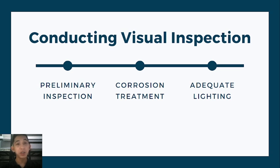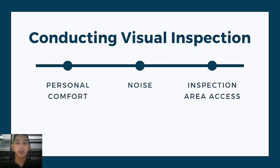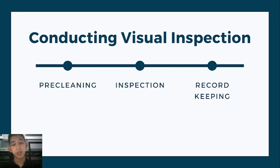Second is corrosion treatment. Because of the criticality of corrosion, personnel who conduct the NDI must be familiar with the appearance of corrosion and must have training and experience in corrosion detection. Moreover, corrosion must be treated during the preliminary inspection. Before inspecting, we need to provide adequate lighting, especially on the parts being inspected. The personal comfort of the inspector can be a factor in the reliability of visual inspection, and therefore the inspector should be comfortable during the process. Noise is also a factor and increases the likelihood of errors, and therefore must be addressed. Inspection area access also plays a huge importance — poor access can lead to poor interpretation of results.